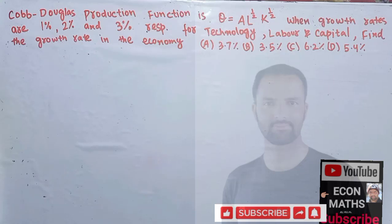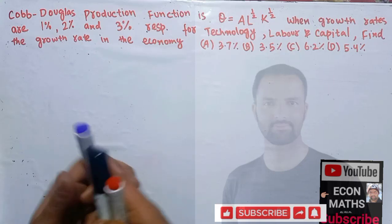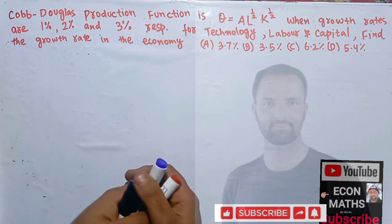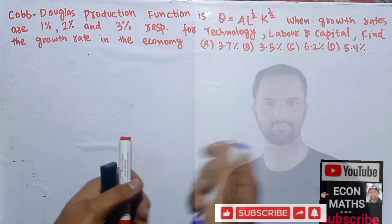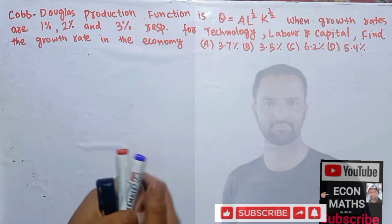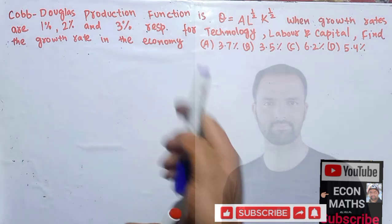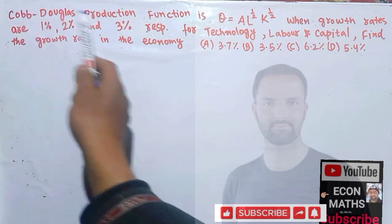Hi, this is Halal. In this video on mathematical economics series, we will solve another question that is related to the Cobb-Douglas production function and we have to find the growth rate in the economy. The question is like this.